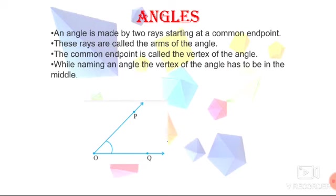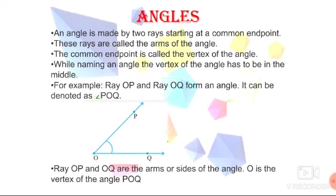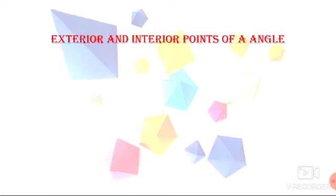While naming the angle, the vertex of the angle should be in the middle. In the given figure, I will name it as angle POQ where the vertex should be in the center or middle while naming. Ray OP and OQ are called arms or sides of the angle and O is the vertex of angle POQ.